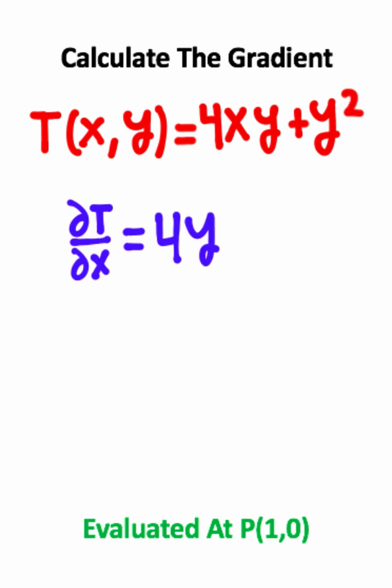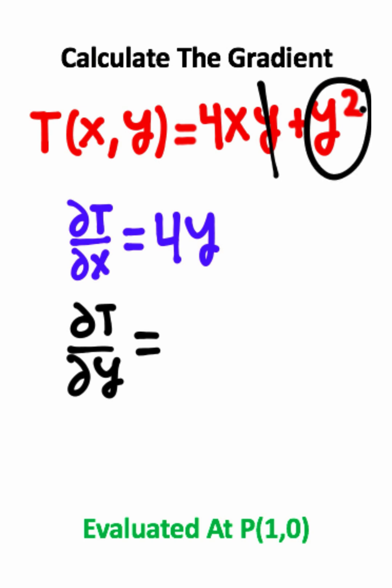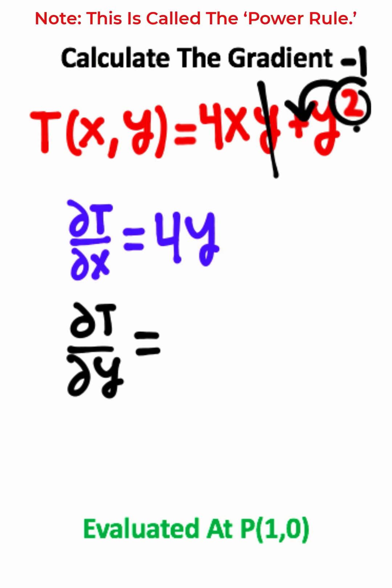The next thing I'm going to do is find the partial derivative with respect to y. If I take the partial derivative of 4xy, the y is just going to derive off. If I take the partial derivative of y² with respect to y, I can take the power, multiply it by the front, and reduce the power by 1. So the partial derivative with respect to y is 4x + 2y.